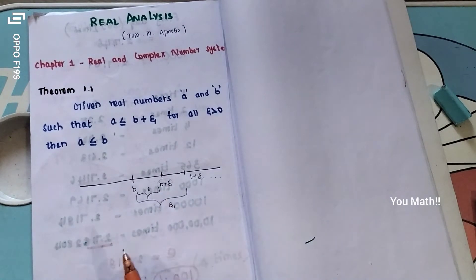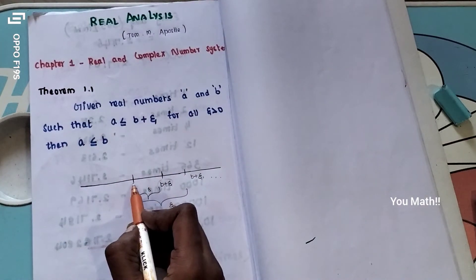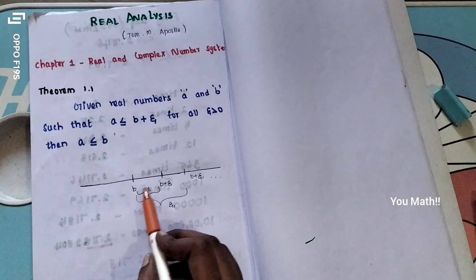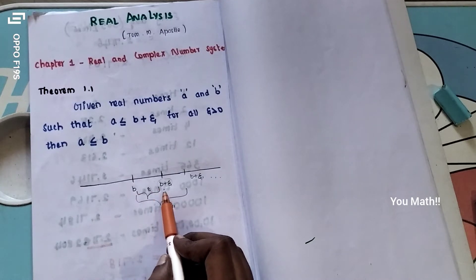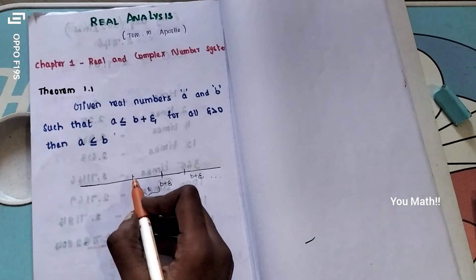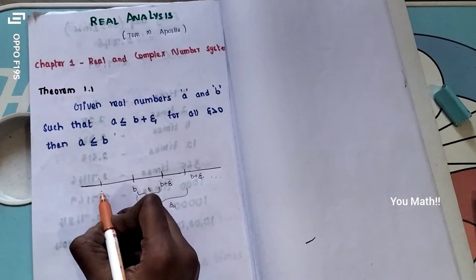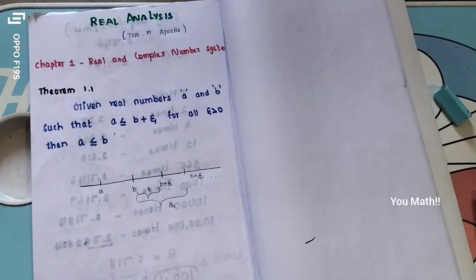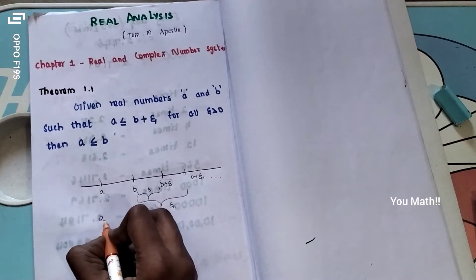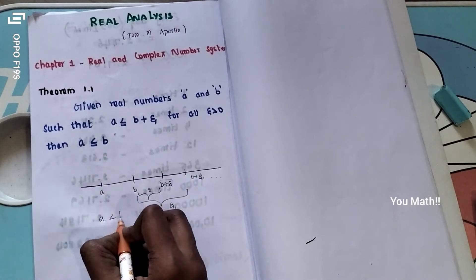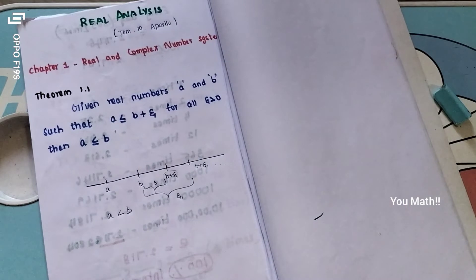So b plus epsilon will denote a number. If I say b plus epsilon, it will define a number and I will denote that point. Then if I mark my main number, it will mark the point beyond b from the last point, because b plus epsilon is stated.